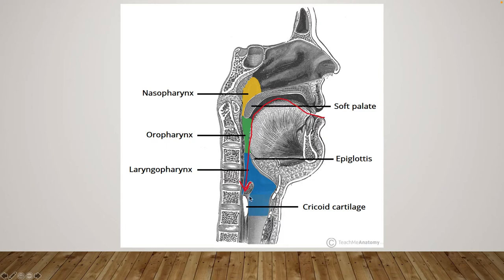This would be the larynx here and then the trachea further down. So food, most of the time, is going to enter into this posterior chamber, which is the esophagus. The epiglottis, when we swallow, will close the glottis — which is the opening to the larynx — and food will enter into our esophagus.